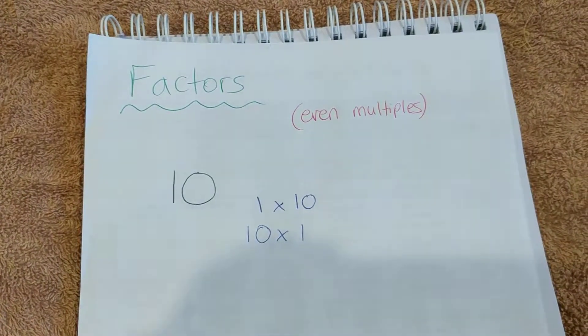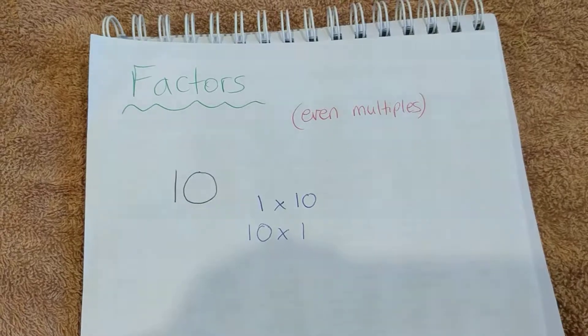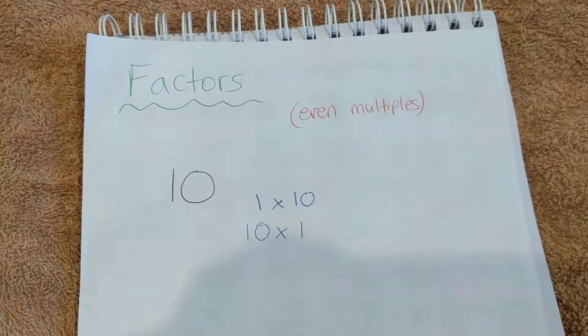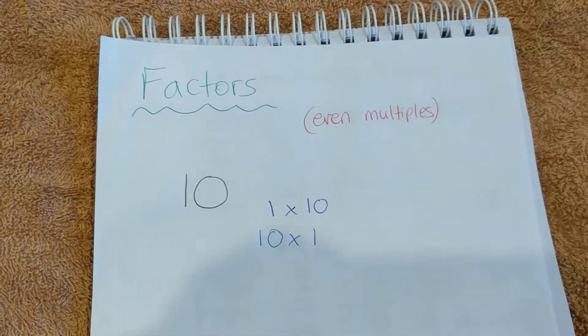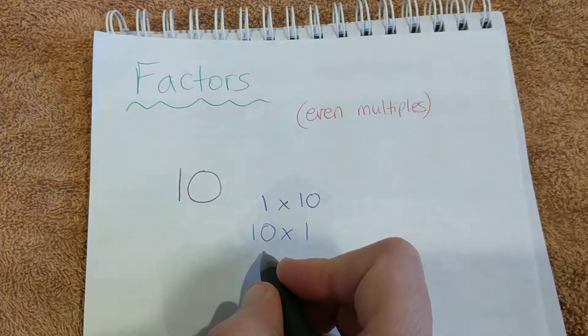Now you can systematically go through all the numbers and figure out if they're a factor or not. For example, the next number is 2. We've already covered 1. 2 goes into 10 an even amount of times - it goes in there 5 times. So 2 is a factor of 10.